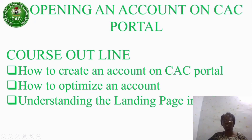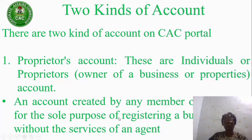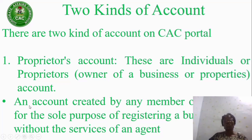The first topic is how to create an account. There are two kinds of accounts that can be created on CAC portal. The first one is the proprietor account — these are individual or proprietor accounts, that is, owners of businesses or properties. This is an account created by any member of the public for the sole purpose of registering a business name without the services of an agent.